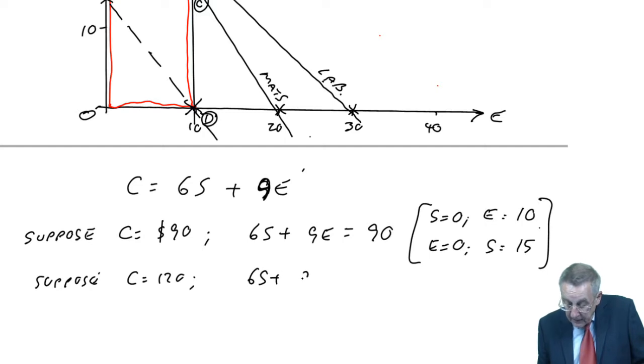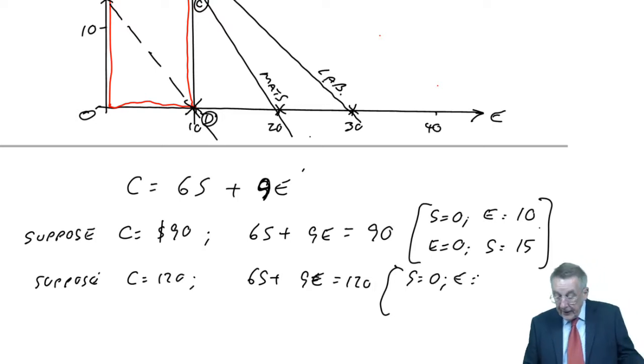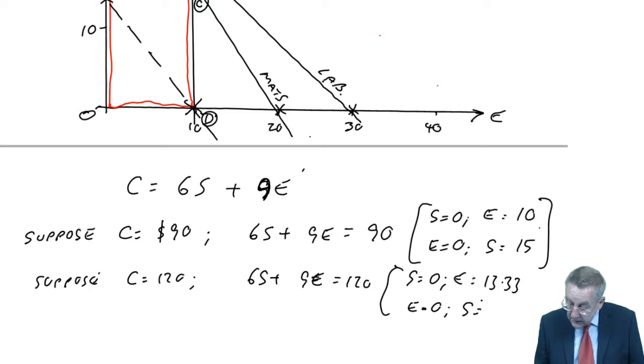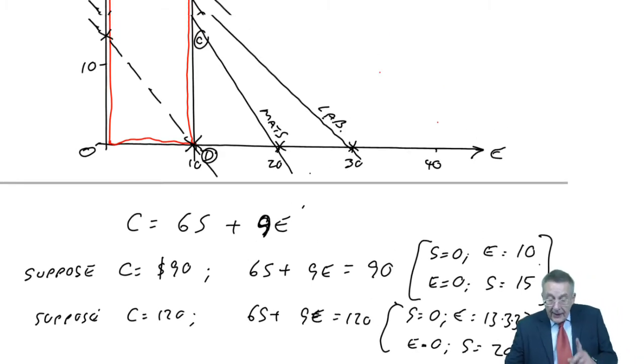6S plus 9E would be 120. Two, oh dear, not a bad day. Two points fix the line, so if S is 0, E is, I could have chosen a nicer figure, couldn't I, 120 divided by 9, 13.33. If E equals 0, S equals 20.